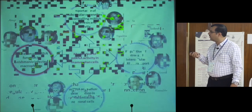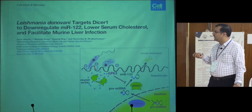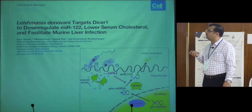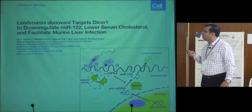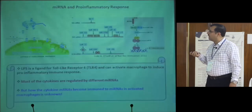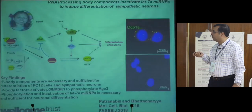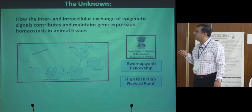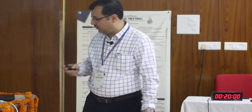We cited the example where microRNA machineries are regulated by organelle interactions, and there is evidence this may also happen for other post-transcriptional events like RNA degradation or even translation. We also discovered that Leishmania-secreted exosomes play a role in controlling microRNA activity in hepatocytes to favor Leishmania survival — Leishmania donovani targets the protein Dicer, downregulates miR-122 to lower serum cholesterol and facilitate liver infection. We also have interesting observations on how microRNA phosphorylation of Argonaute can regulate processes in neuronal cells. With that, I end by noting that intercellular exchange of epigenetic signals can contribute to and maintain gene expression homeostasis in the human liver. Thank you.